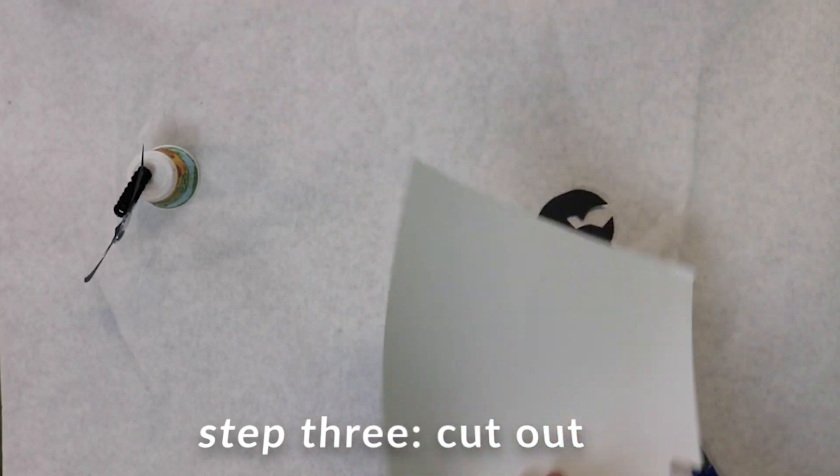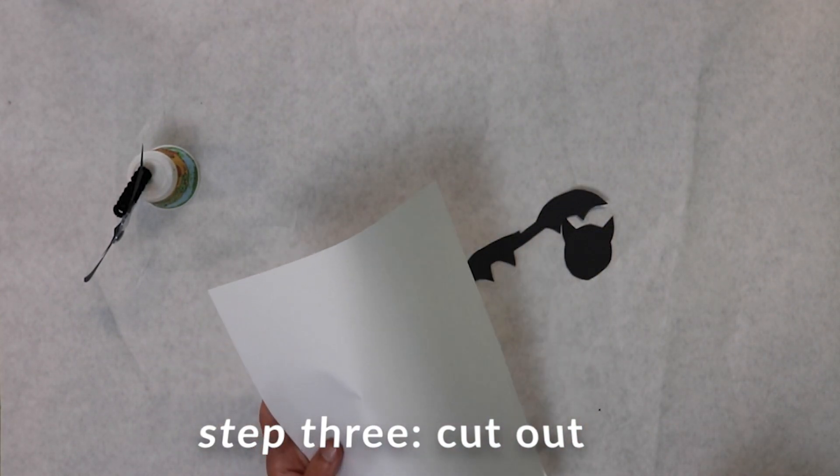Step three, cut out some triangles out of a white piece of paper for the bat's fangs.